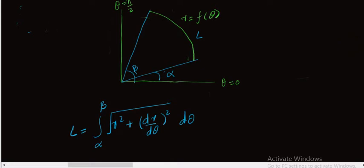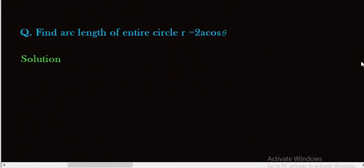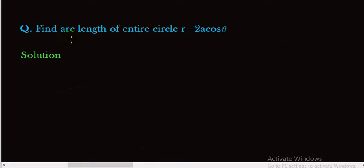This is the formula for finding arc length in polar coordinates. Now we solve a question to understand this concept. Find the arc length of the entire circle r equal to 2a·cos(θ). First we try to sketch this curve. This is a polar curve which represents a horizontal circle passing through the origin.